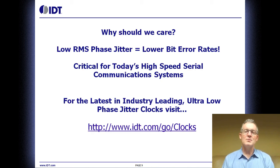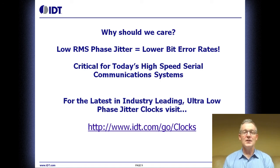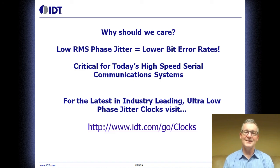In summary, why should we care? Low RMS phase jitter equals low bit error rates. This is critical for today's high-speed serial communications like 10 Gig, 40 Gig, 100 Gigabit Ethernet, PCI Gen 3, and others. For the latest industry-leading ultra-low phase jitter clocks, please visit www.idt.com/go/clocks. Thanks for viewing today's video and thanks for considering IDT clock devices.